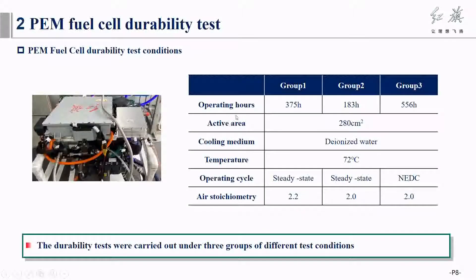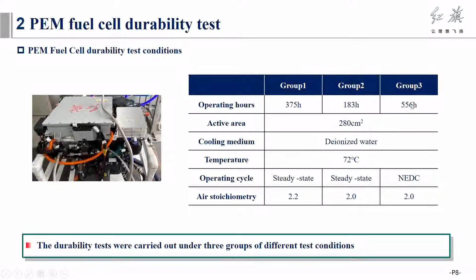In this section, we first conduct three groups of durability tests under different conditions. System parameters and test conditions are shown in the figure. The durability test times of the three groups were 375 hours, 183 hours, and 556 hours.